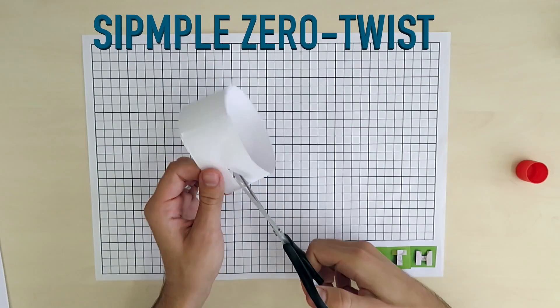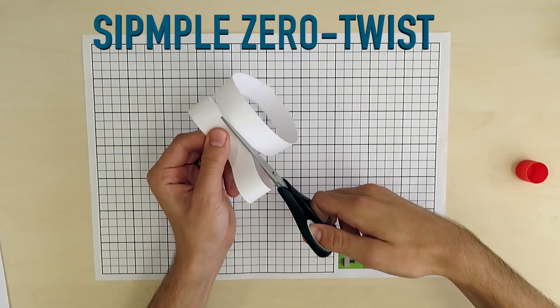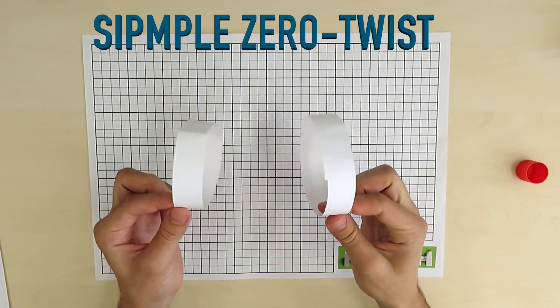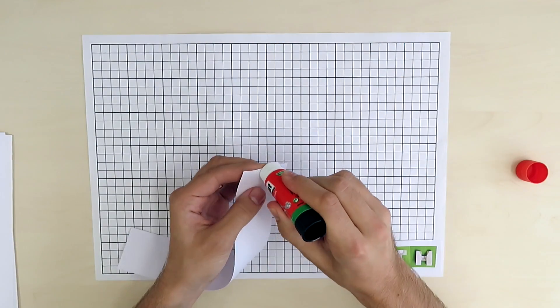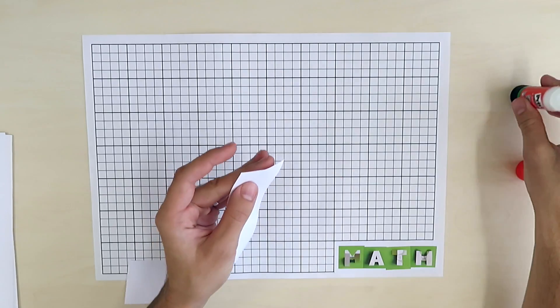Let's start by cutting various shapes. When we cut simple zero twist loop lengthwise in half, we get two identical zero twists. No surprise.